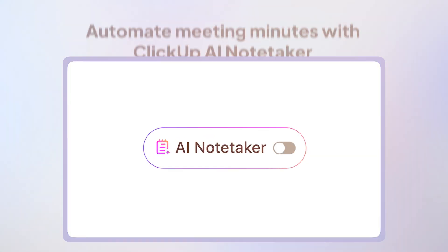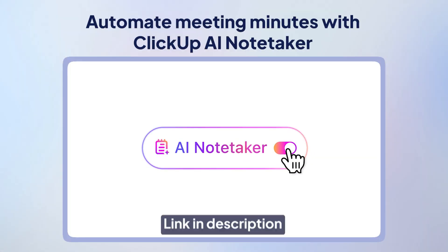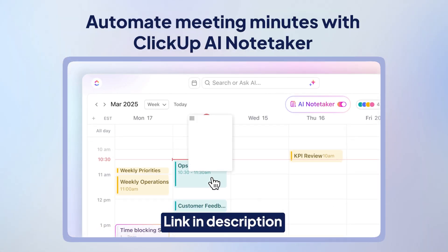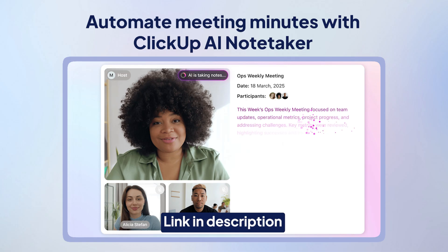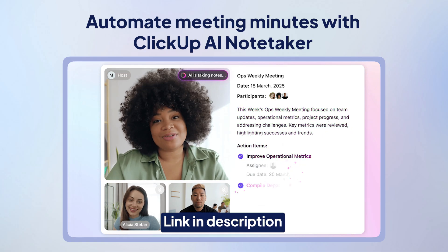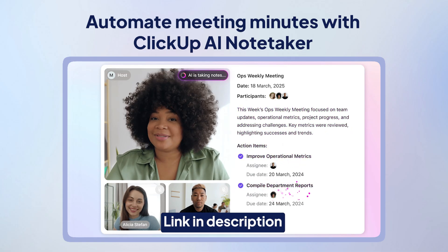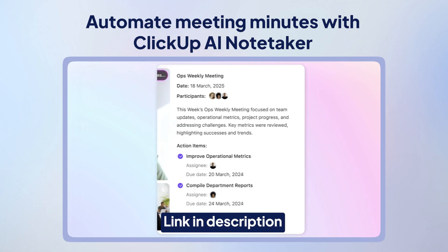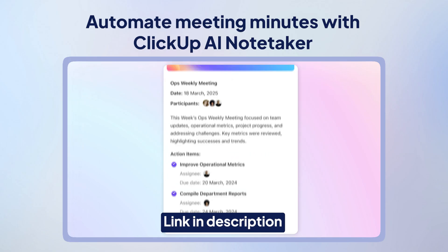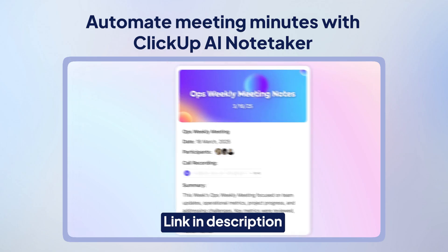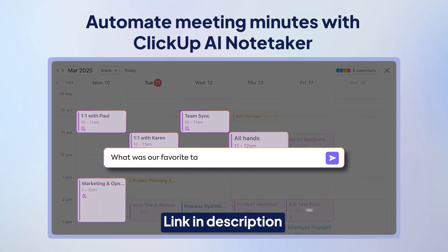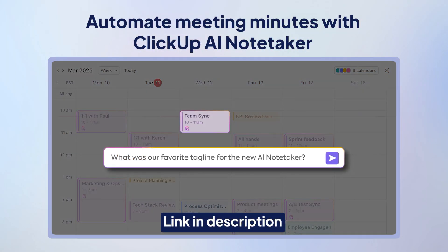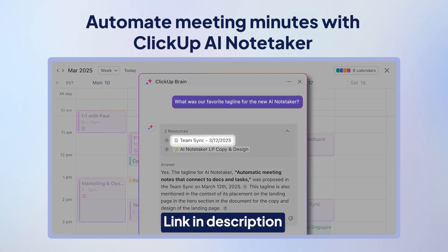AI can help you out here as well. Use ClickUp's AI NoteTaker to voice-record, transcribe, and summarize your meetings. Get clearly documented meeting notes straight into your inbox at the end of every important discussion. Your conversations are automatically converted into action items, and you can get instant insights by asking AI questions based on your notes.